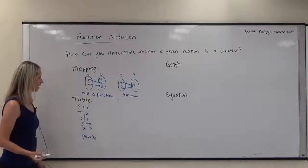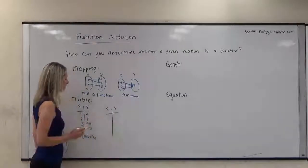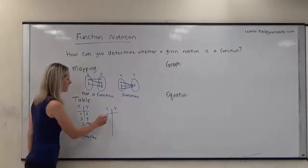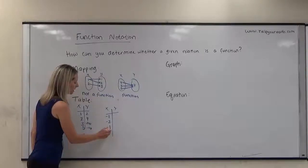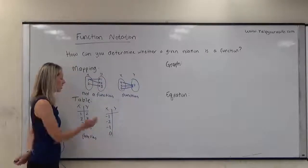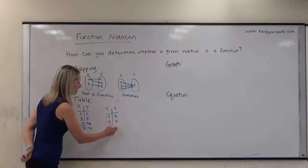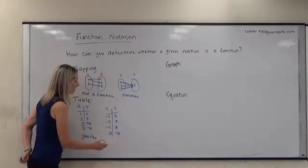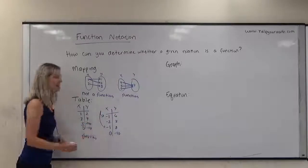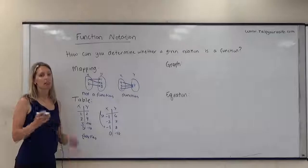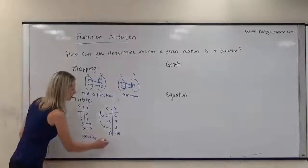A relation that is not a function could look like this. We have X and Y — my input and my output. My input could be negative one, negative two, negative one, zero, and my output would be six, seven, eight, negative ten. You notice that negative one repeats — there's a negative one here and a negative one here. That indicates there is one input mapping to more than one output. This is not a function.